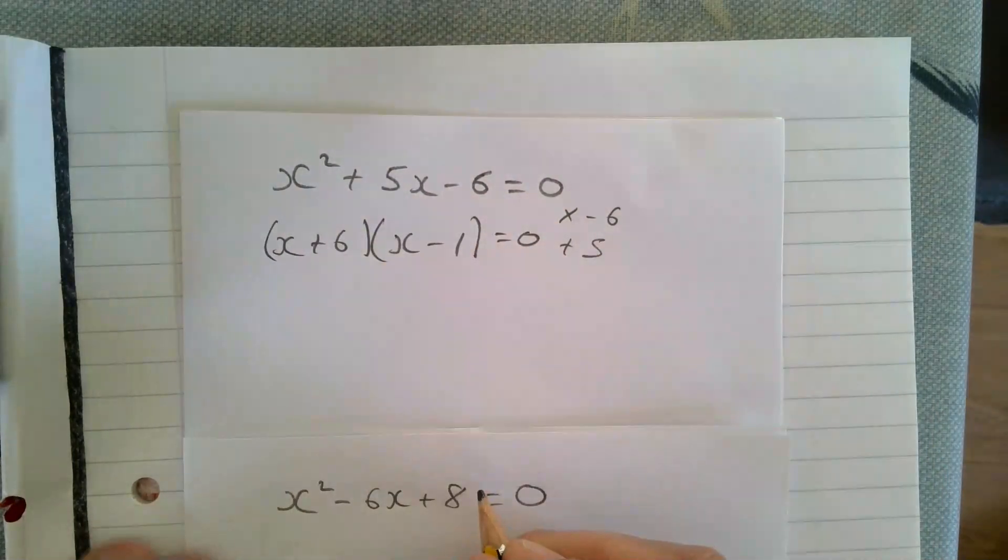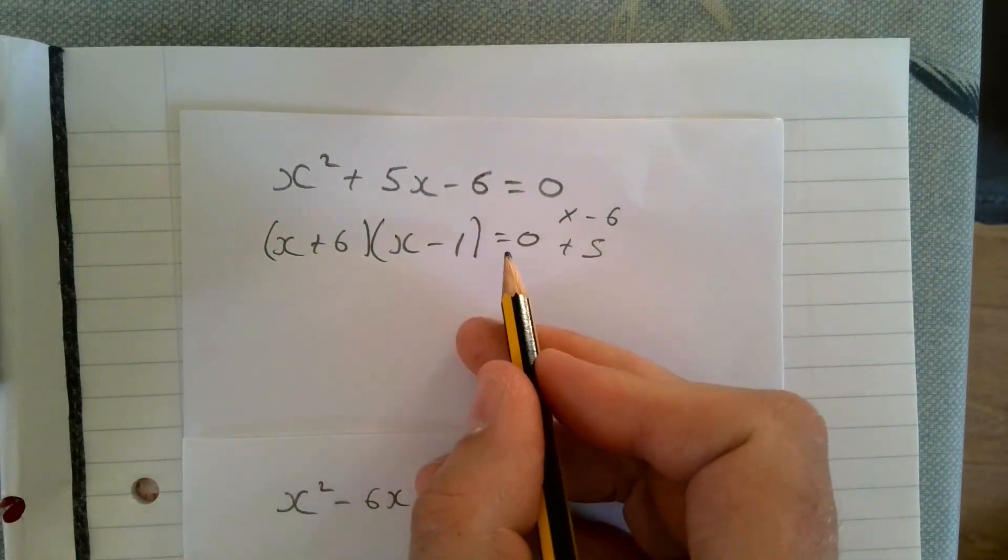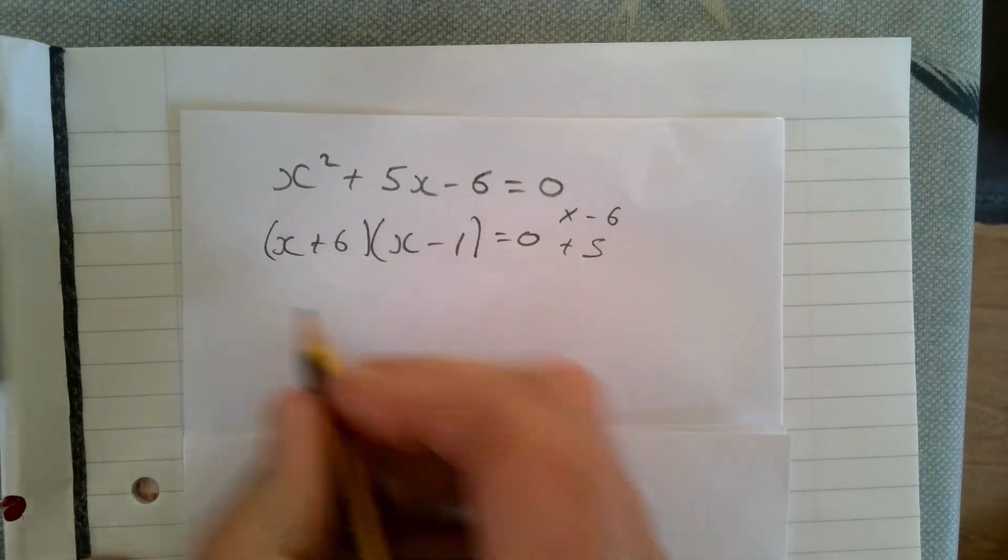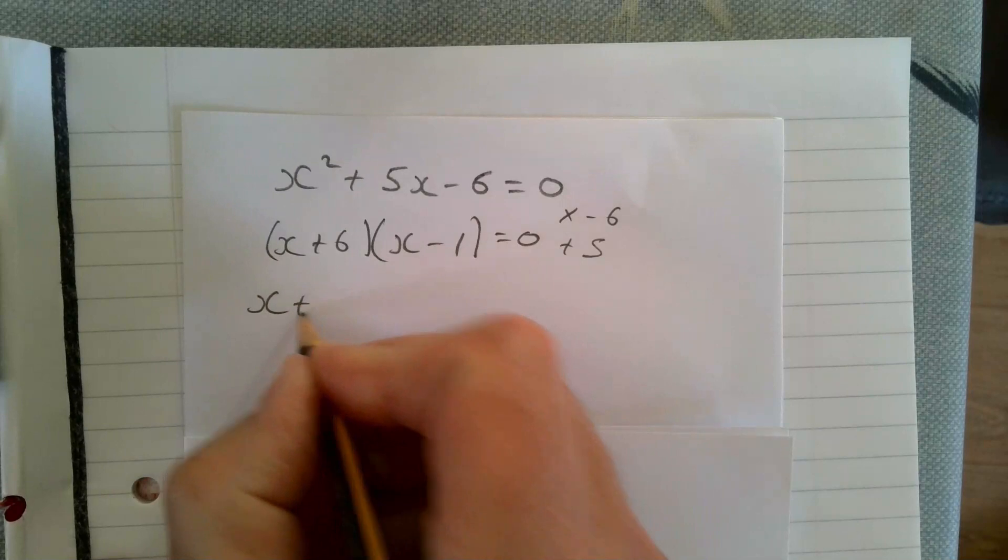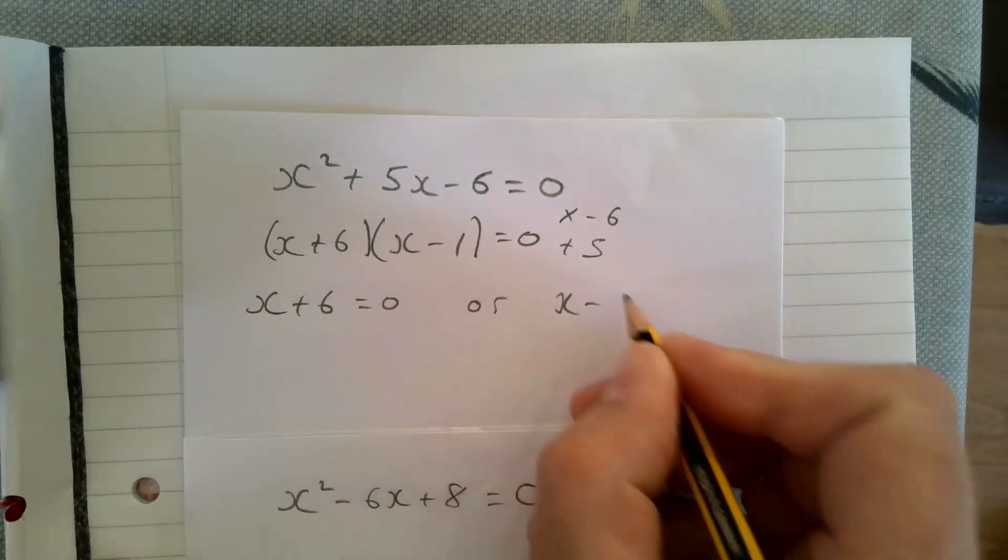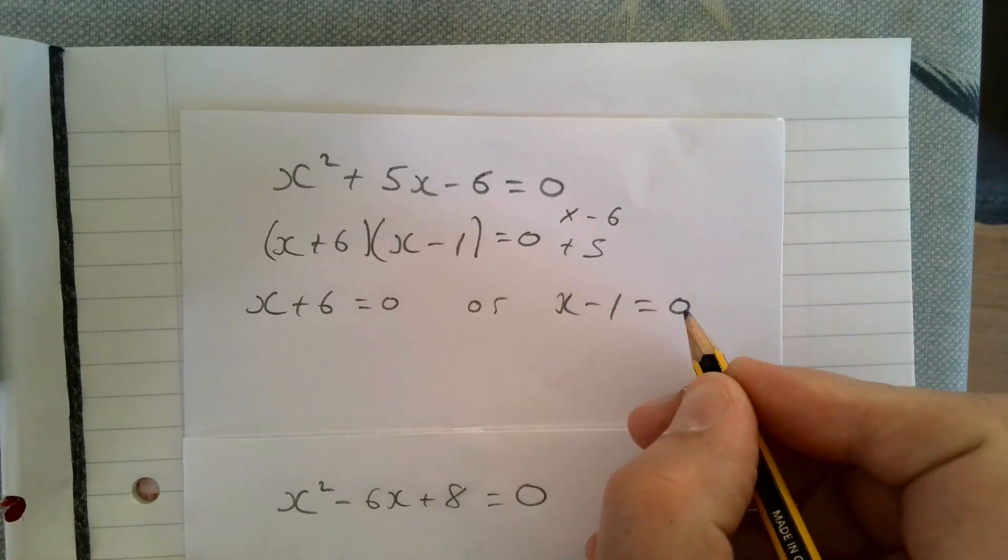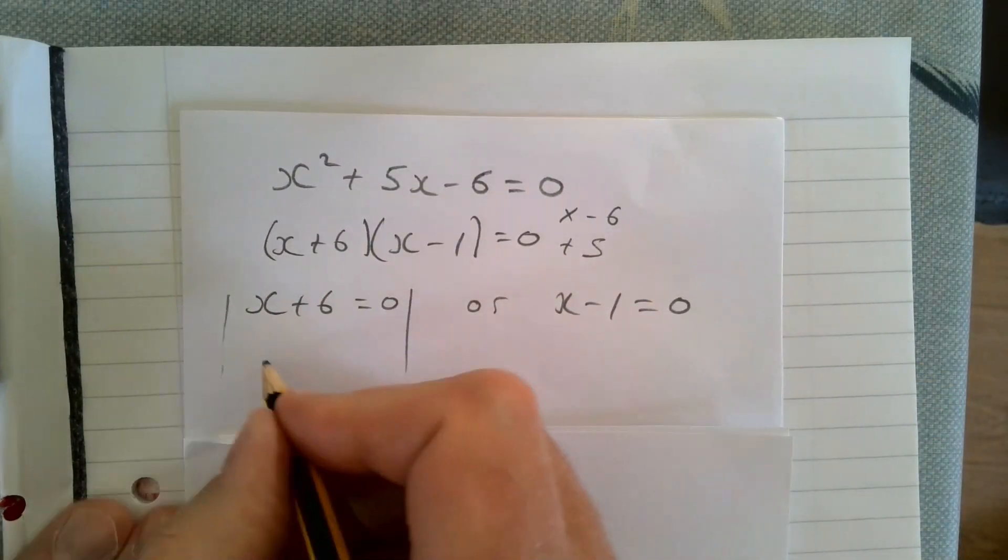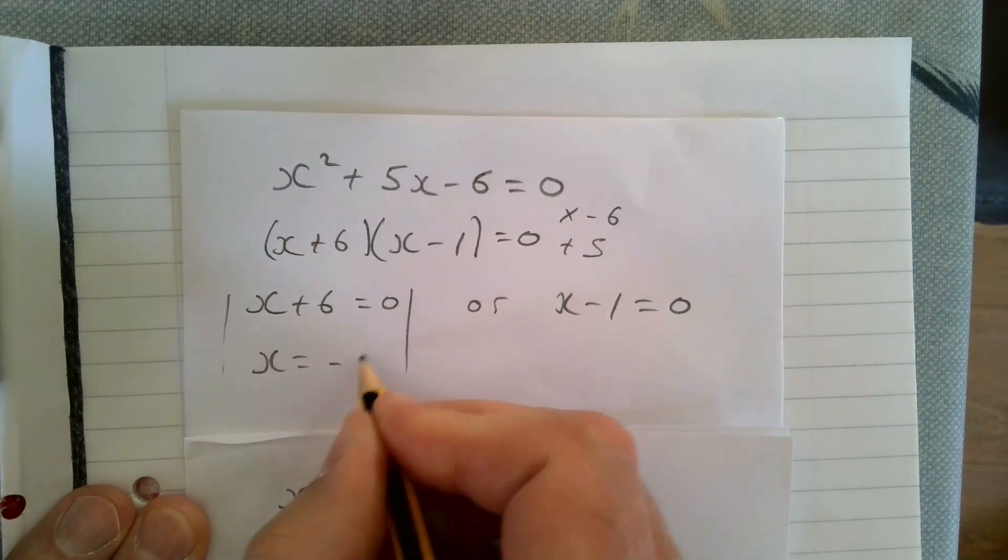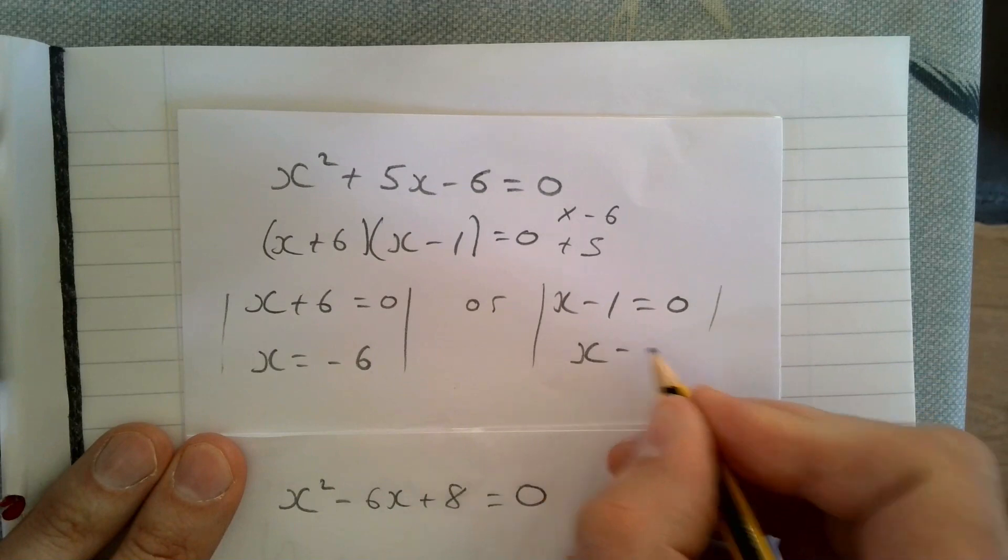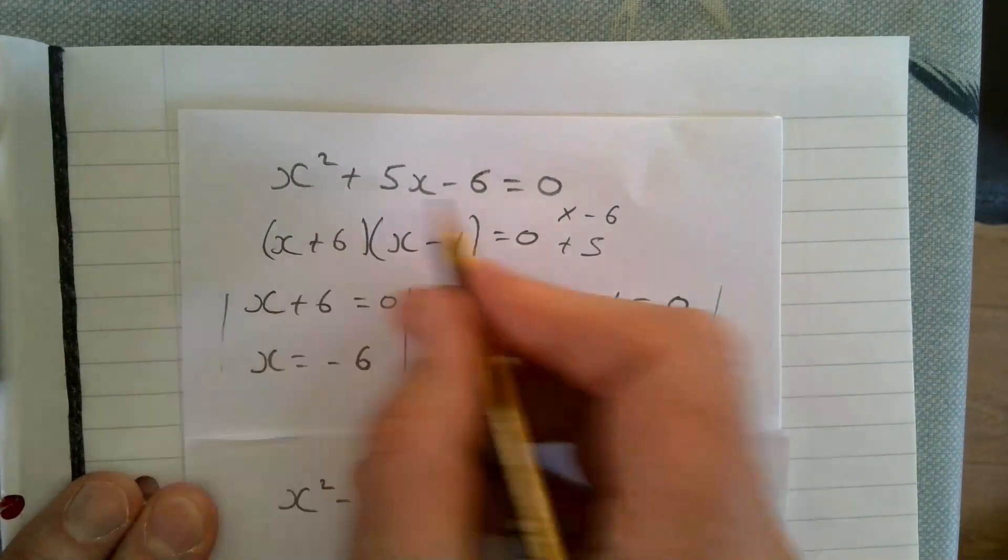The way we solve this is that either this bracket must equal zero or this bracket must equal zero. So x plus six equals zero, or x minus one equals zero. You can set it up like a year eight thing—take away six from both sides, so x is minus six.